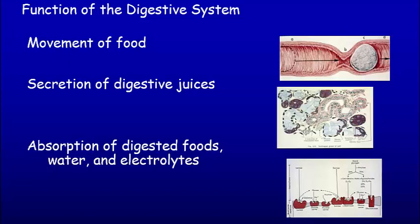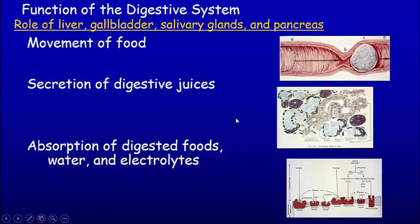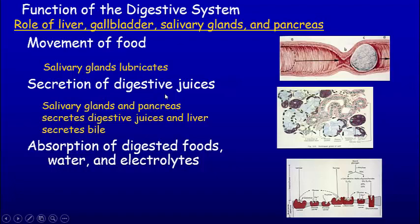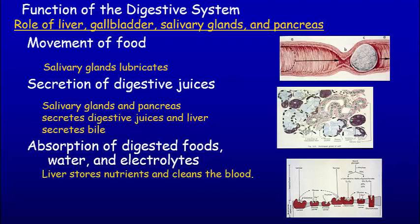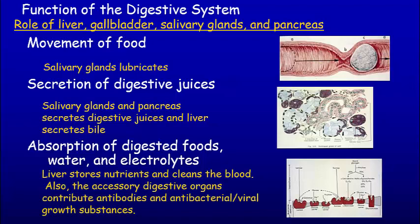The digestive system does three important things: it moves food, it secretes digestive juices, and it absorbs food stuff. The role of the liver, gallbladder, salivary glands, and pancreas in terms of movement of food is they lubricate the food stuff coming down. In terms of digestion, the salivary gland and the pancreas secrete digestive juices and the liver secretes bile which emulsifies fats. In terms of absorption, the liver stores nutrients and cleans the blood, and the accessory gland organs contribute to producing antibodies and antibacterial and antiviral substances as well.